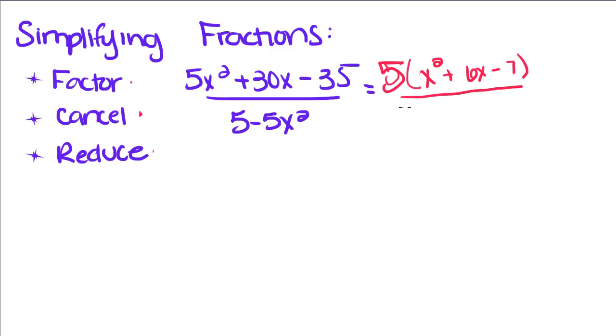We can factor 5 out of this one too, 1 minus x squared. So those 5's will go ahead and cancel, and now we can factor the top and bottom again.